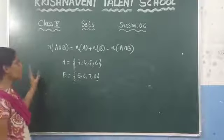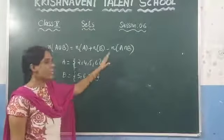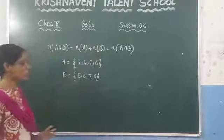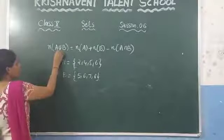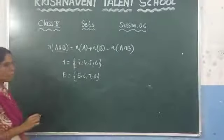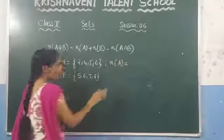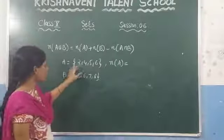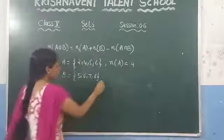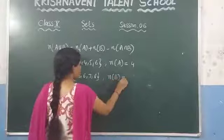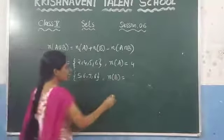If asked to verify N(A ∪ B) = N(A) + N(B) − N(A ∩ B), first find the LHS and then the RHS. N(A) is the number of elements in set A: {2, 4, 5, 6} — so N(A) = 4. N(B) is the number of elements in set B: {5, 6, 7, 8} — so N(B) = 4. Now find the LHS, which is N(A ∪ B): write all elements present in A and B.